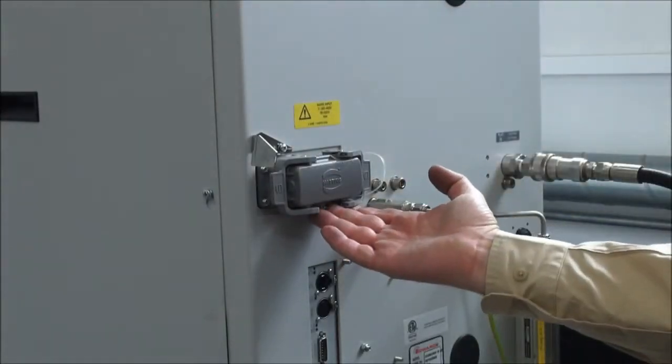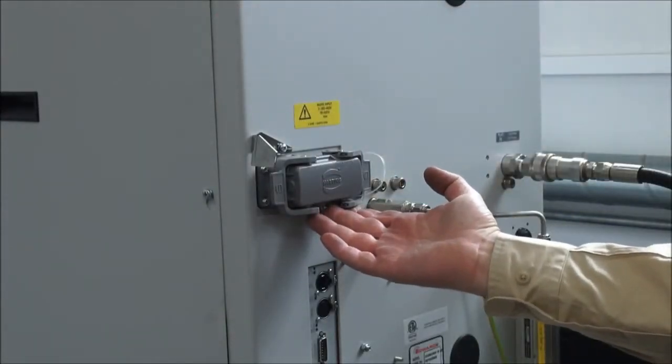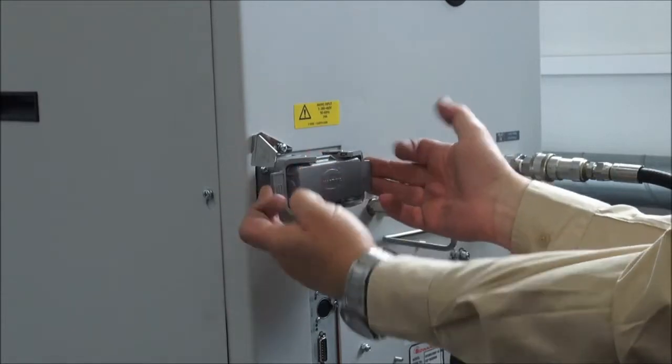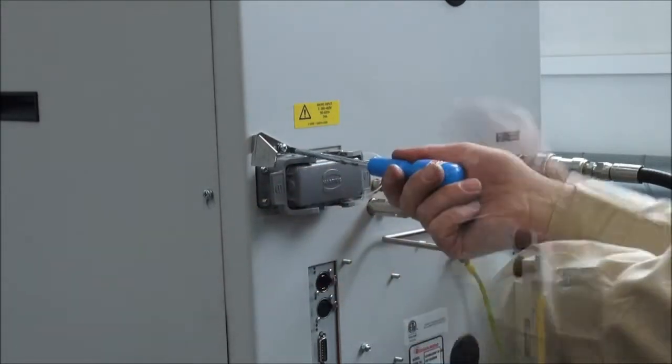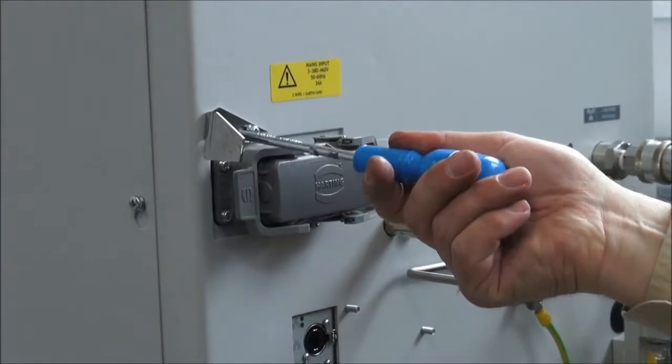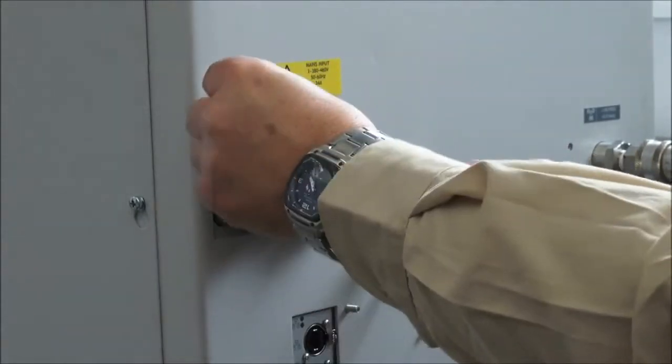This is the Harting three-phase power receptacle on the back of the GXS. There are two locking clips securing the cover. There is also a safety tab which should be loosened and pushed out of the way before the left clip can be released.